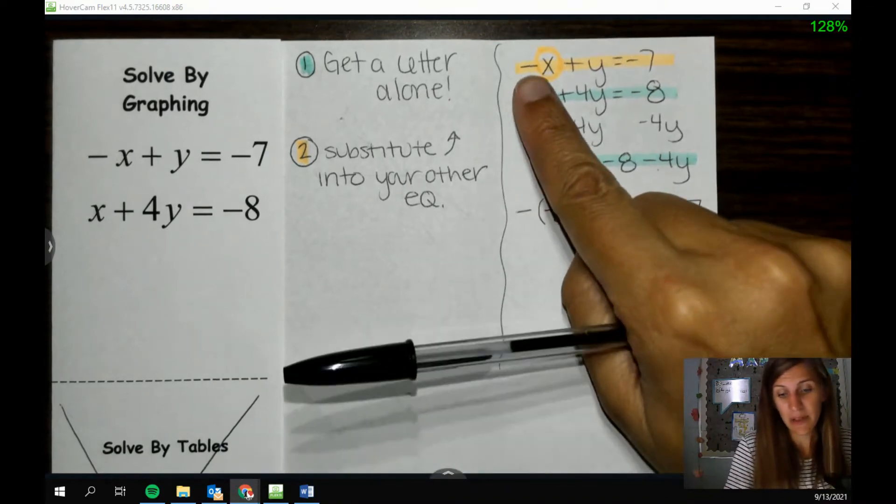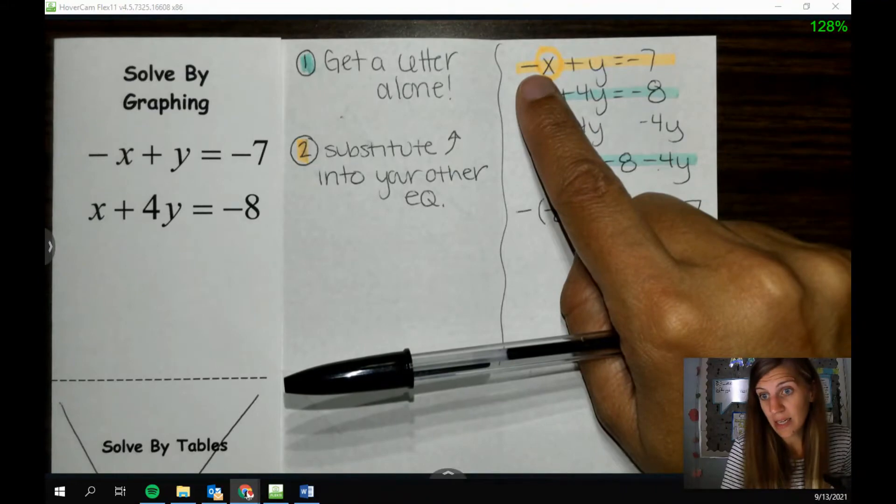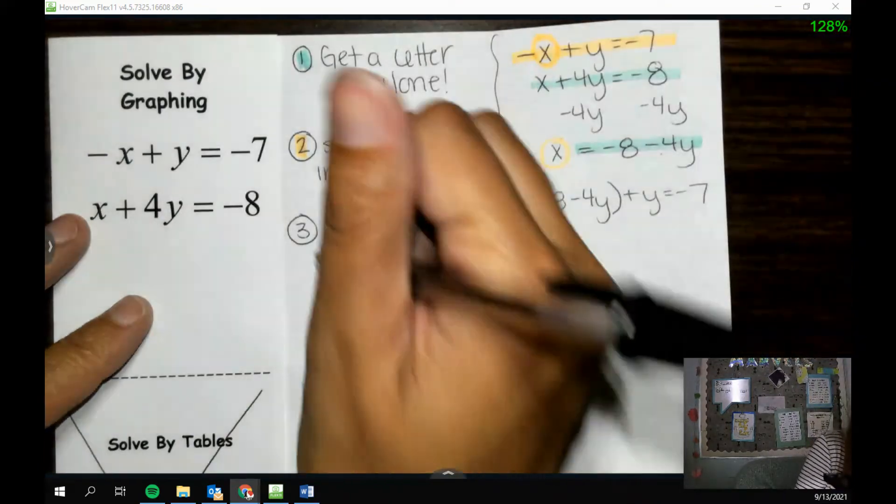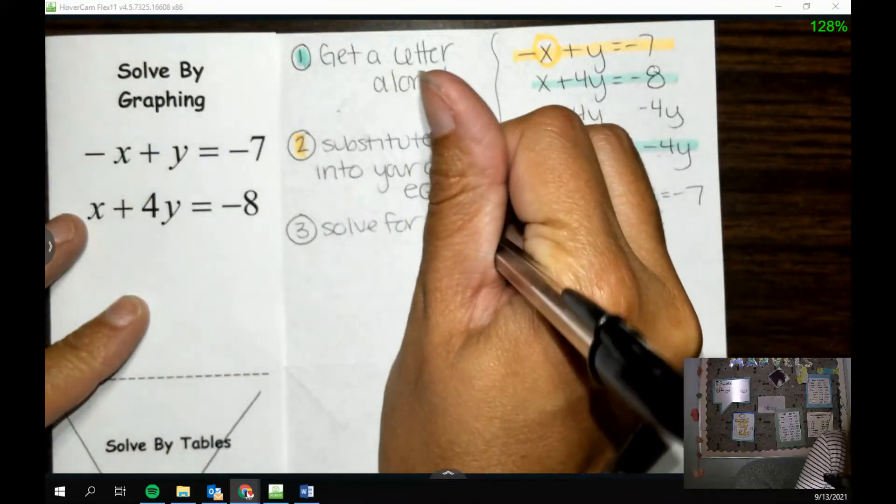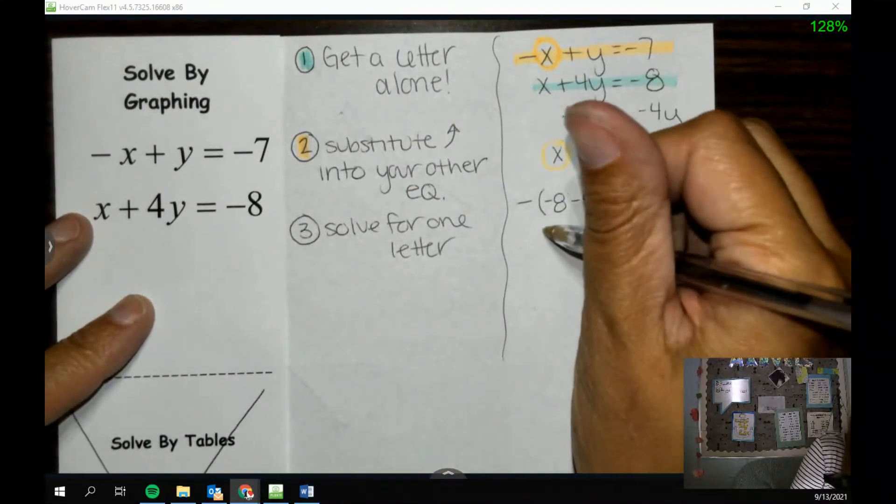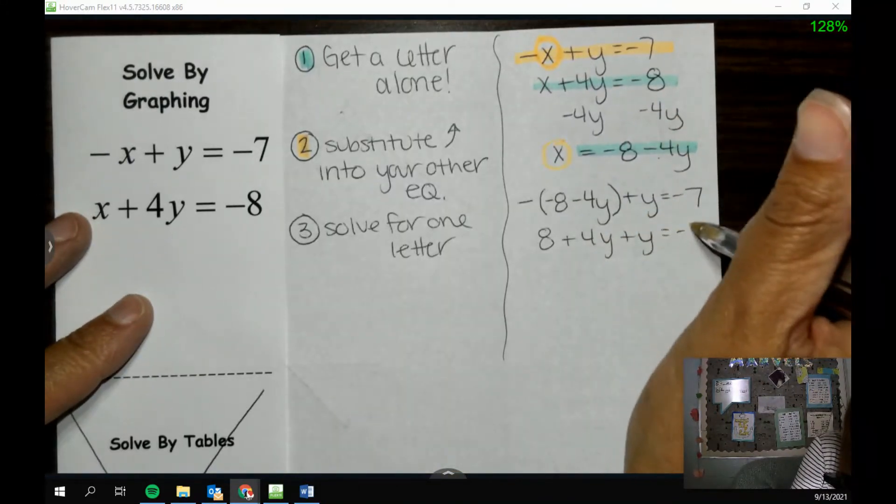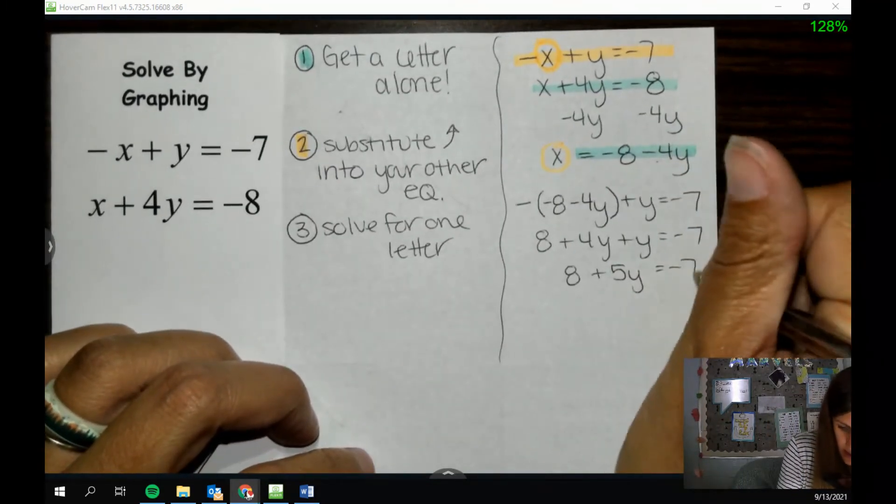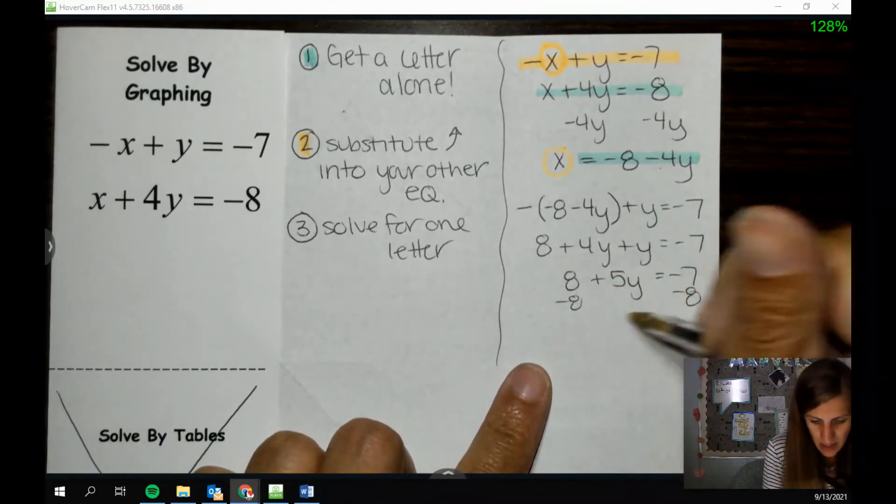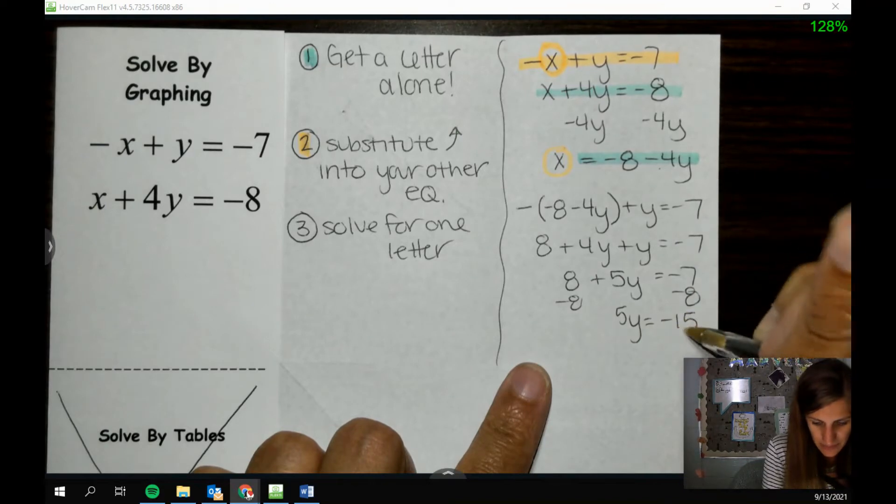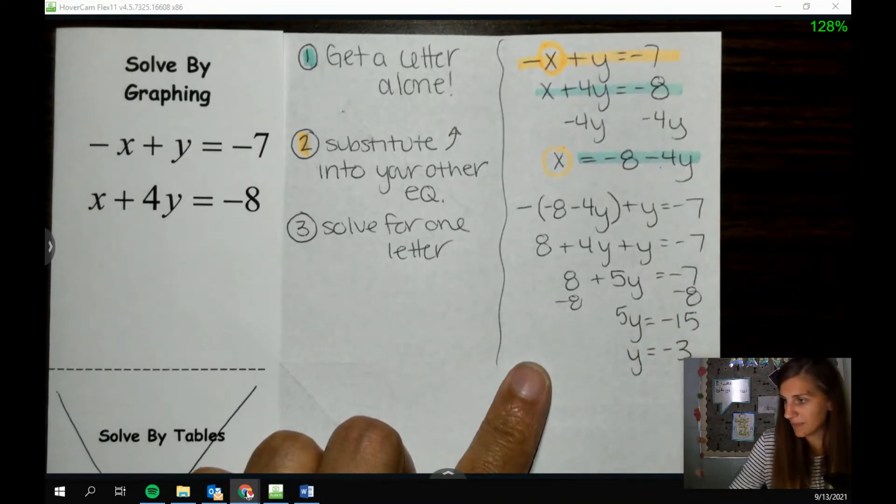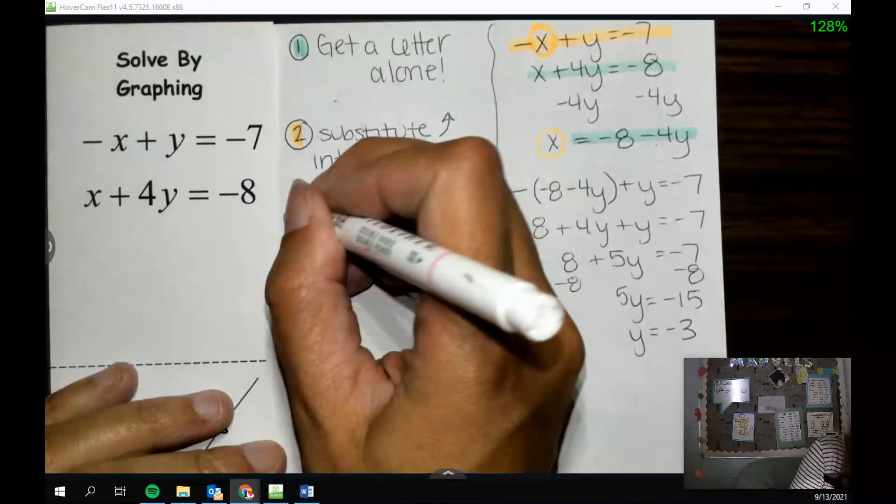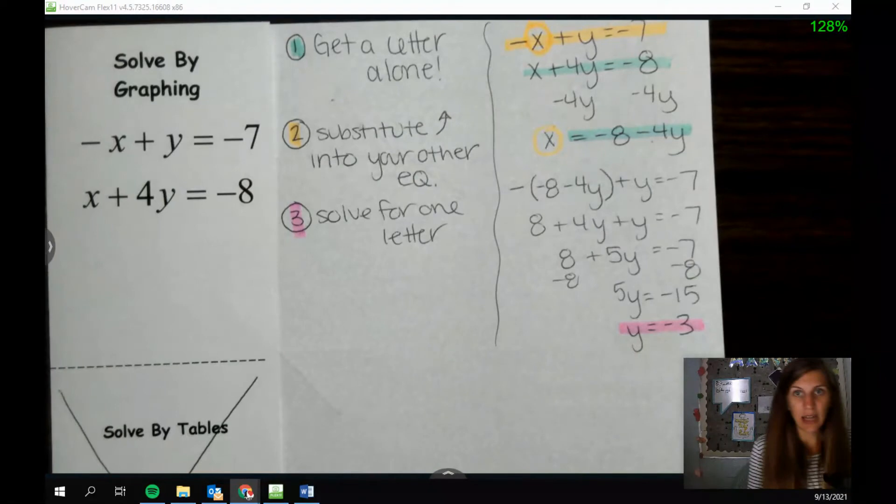Now it's good to have parentheses because if there is a number in front of x, like there is here, negative 1, I need to distribute that and multiply it to everything. But now at this point, it's super nice, I only have one letter to solve for, so we're going to solve for one letter right now by distributing. So I'll have 8 plus 4y plus y equals negative 7. Then I can combine like terms, so 5y. And then we can solve by subtracting the 8. So 5y equals negative 15. And then dividing the 5, so y is negative 3.